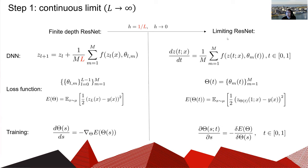Now I want to introduce the continuous limit. We first let the number of layers l go to infinity. In our ResNet model, if we see 1/l as the time step, then l going to infinity means the time step h goes to 0. The ResNet model then converges to an ODE, with artificial time t from 0 to 1. In this limit, our parameters also transfer to parameters depending on t, and we define the loss function using the output of the neural network. The gradient flow of the parameters becomes a coupled ODE.